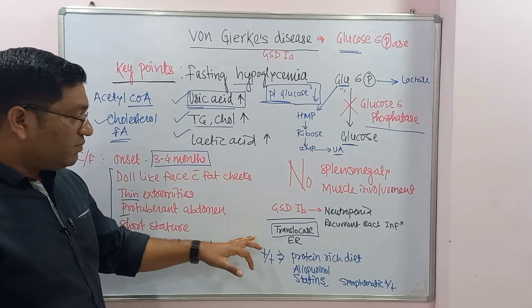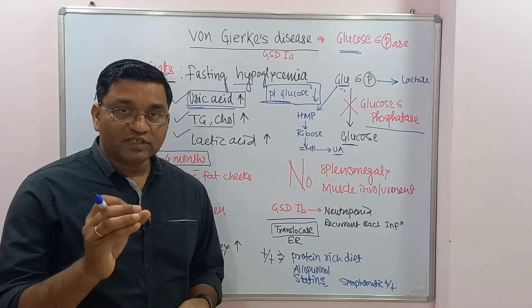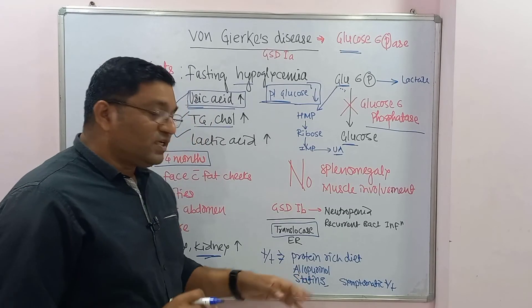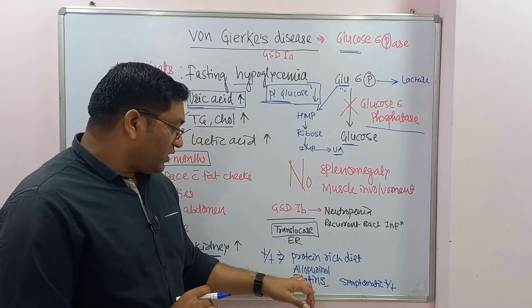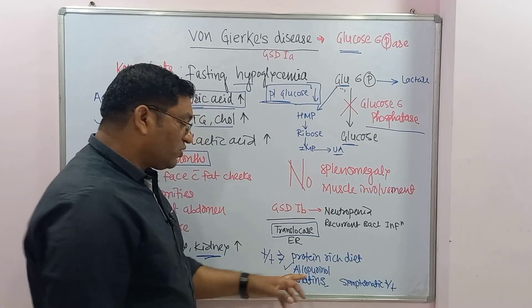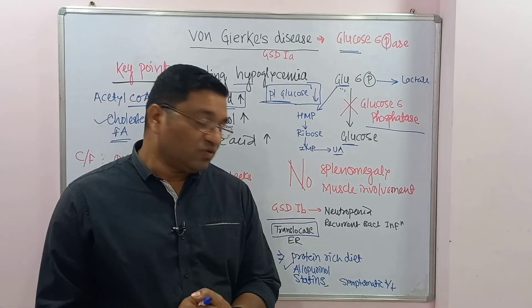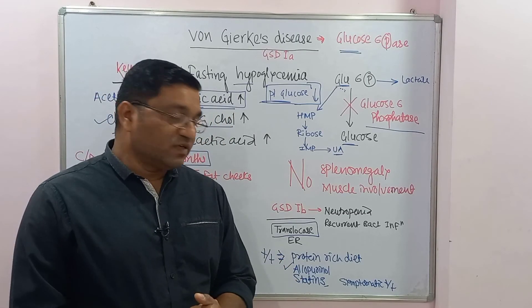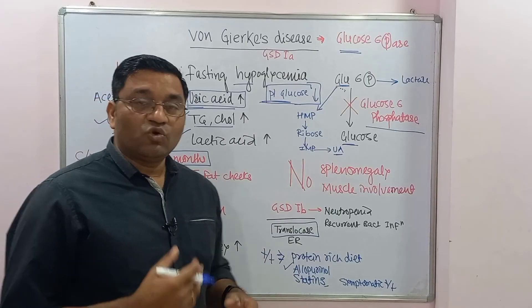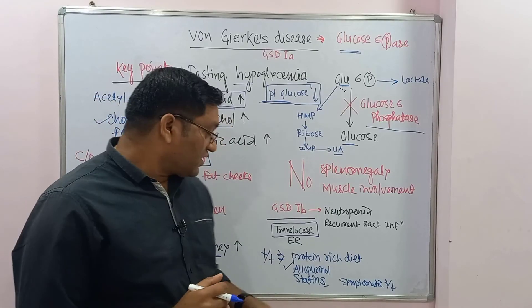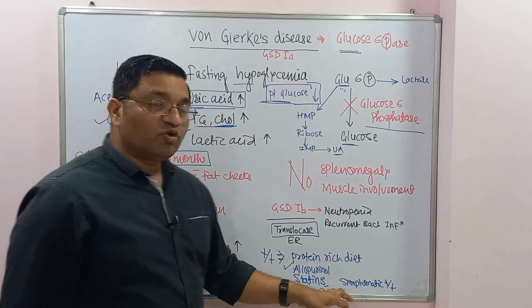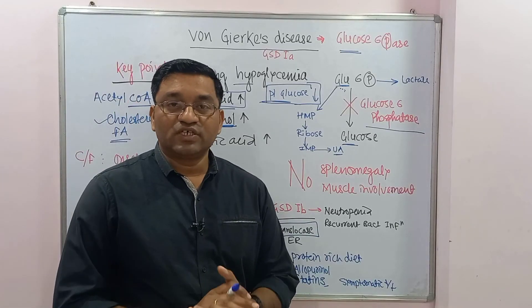For treatment, frequent small meals with modified starch are given, along with a protein-rich diet. Allopurinol, a competitive inhibitor of xanthine oxidase, is given to reduce uric acid levels. Statins such as lovastatin and simvastatin are given to reduce cholesterol levels. Symptomatic treatment is also provided.